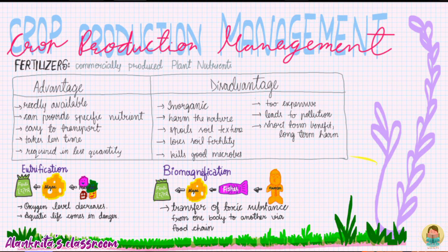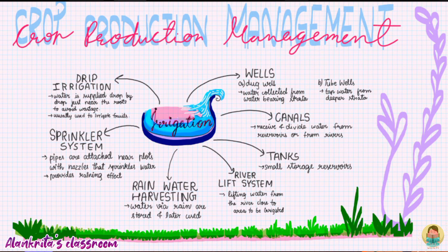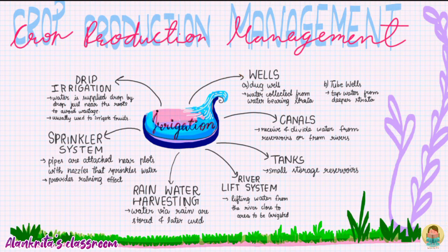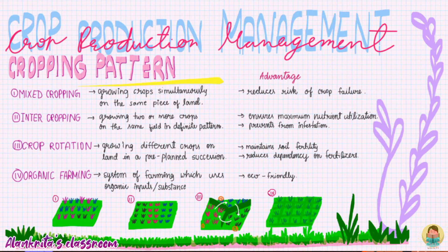Here is another mind map about irrigation, dealing with different types of systems like wells, dug wells and tube wells, canals, tanks, river lift system, rainwater harvesting, sprinkler system, as well as drip irrigation. Now the third part is cropping pattern.